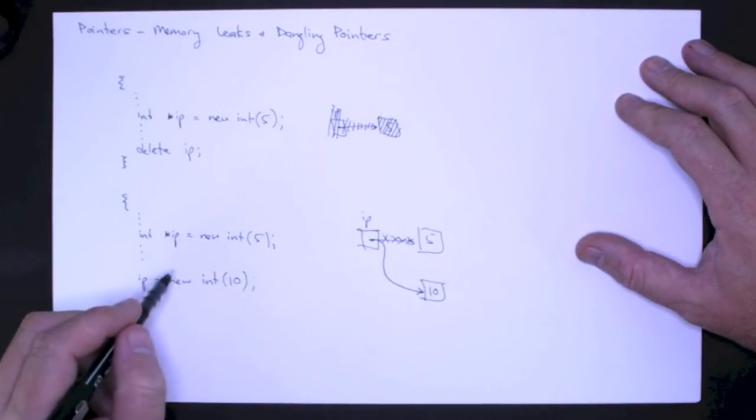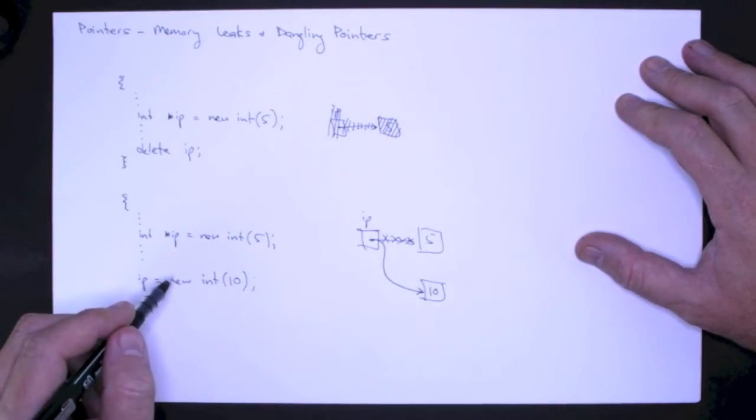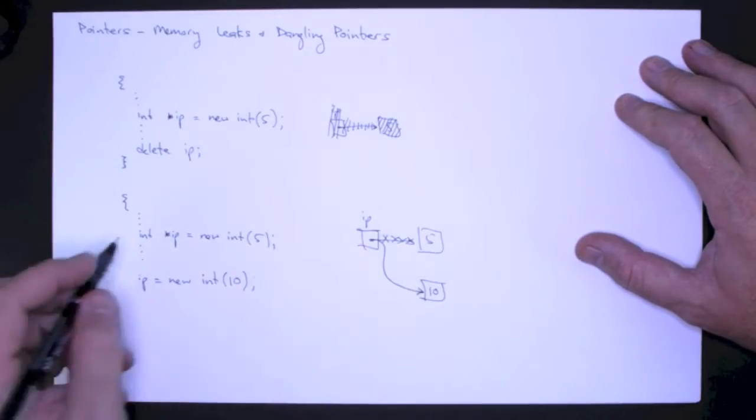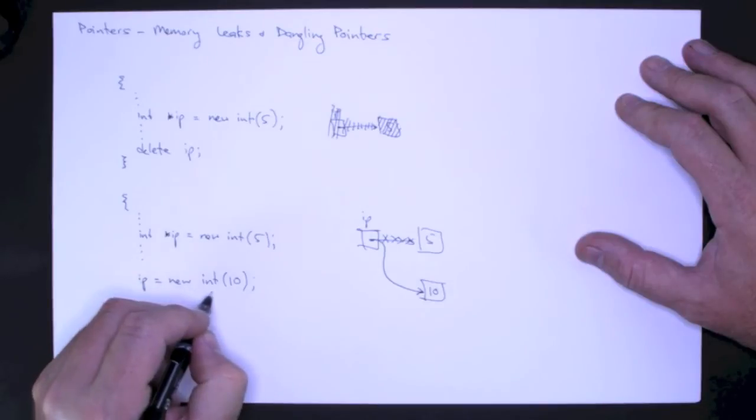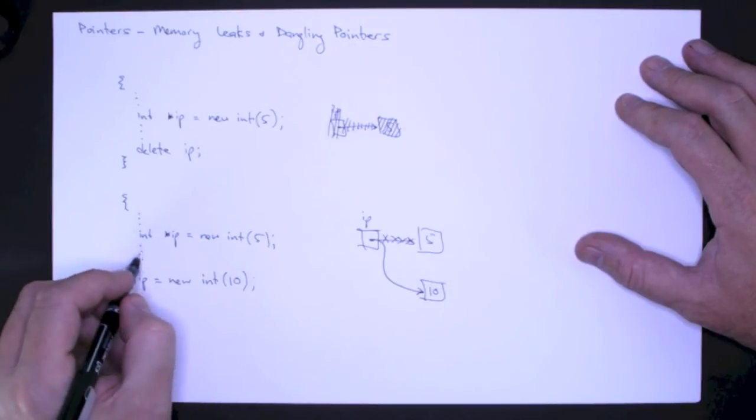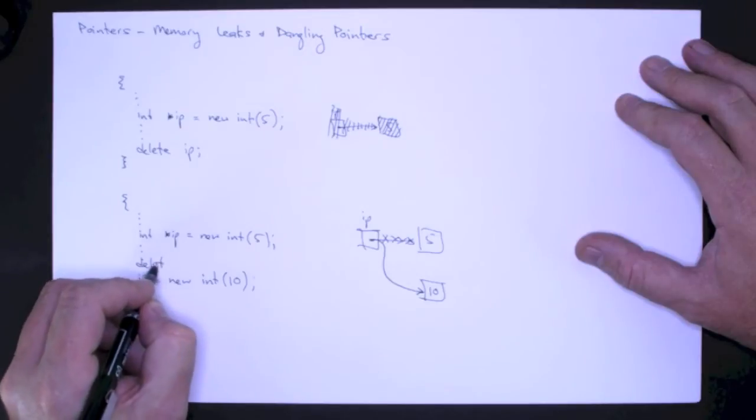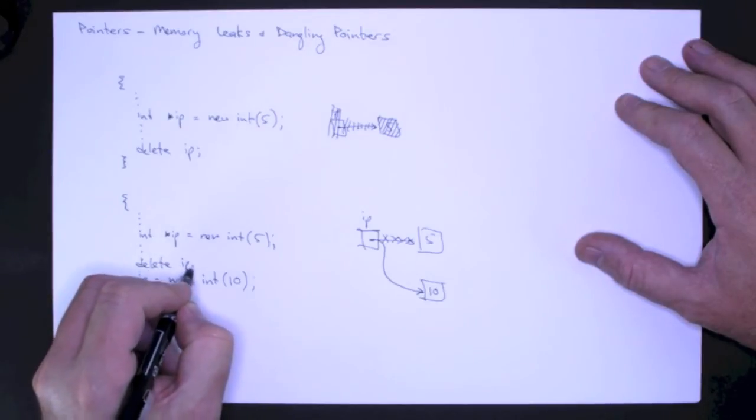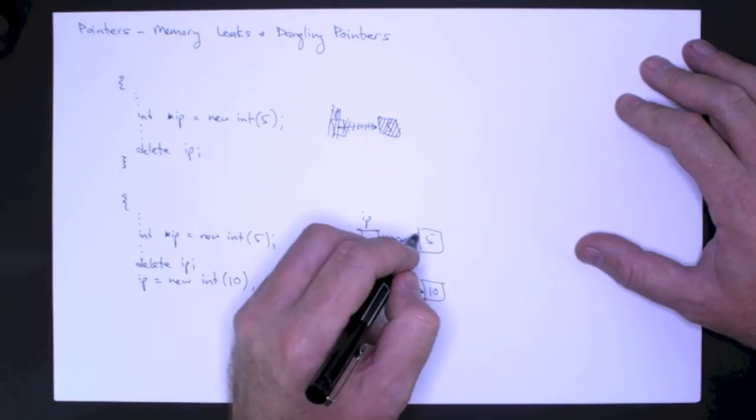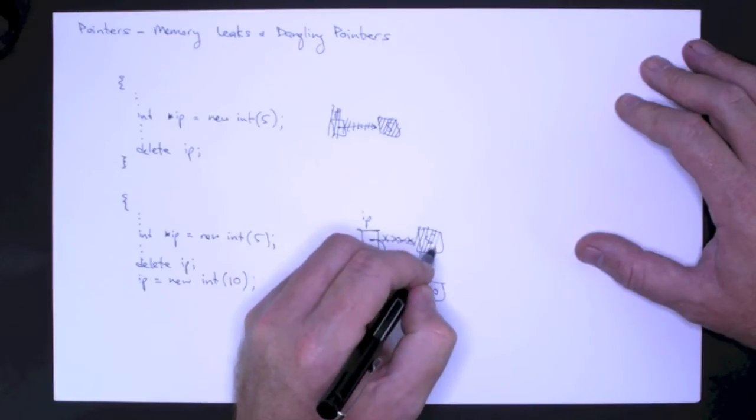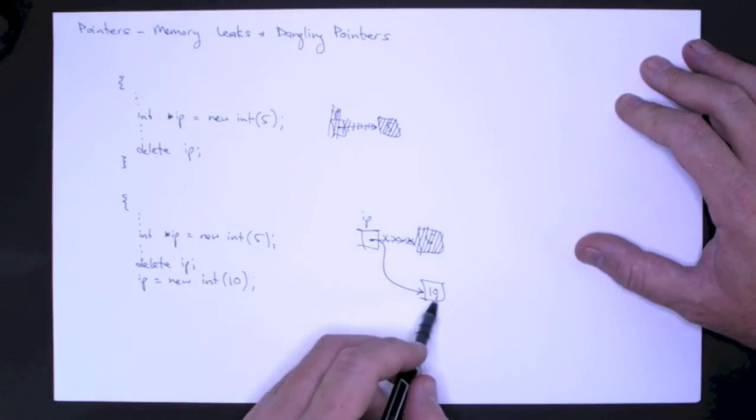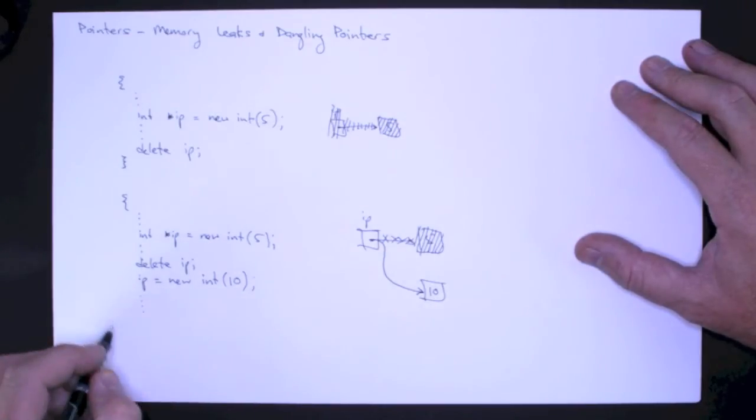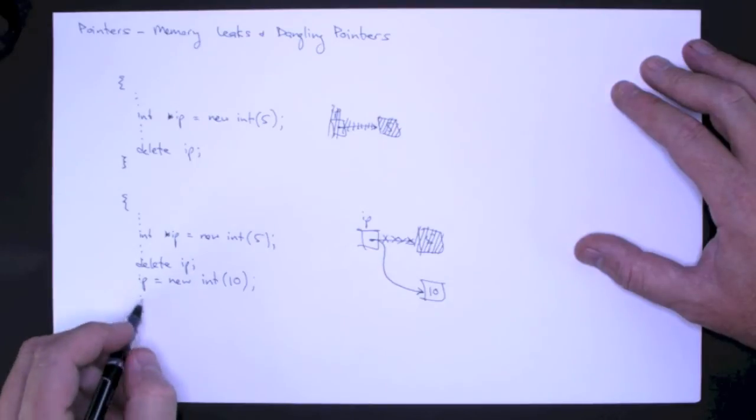This is the kind of thing we want to be able to do, but we either have to have another pointer on 5 or before we dynamically allocate new memory and assign that address to IP here. We have to delete IP. Then what would have happened is 5 would have been deallocated. Then we would have stored the new address in IP, which points to 10. And at some point before the block ends, we would expect to see another delete.